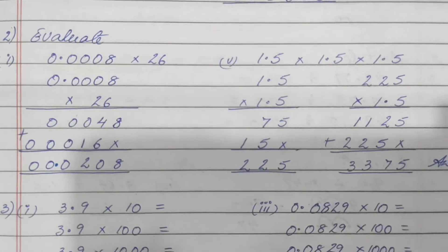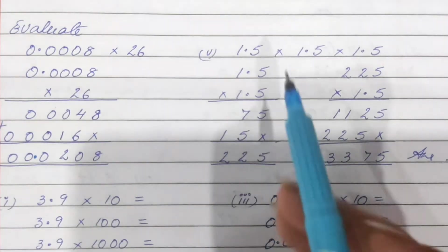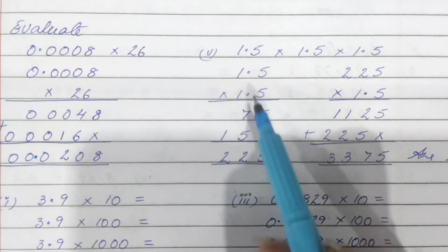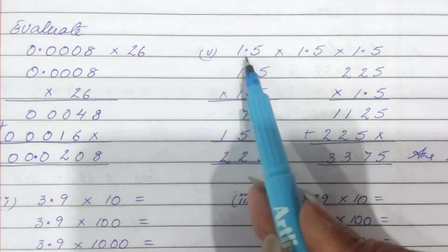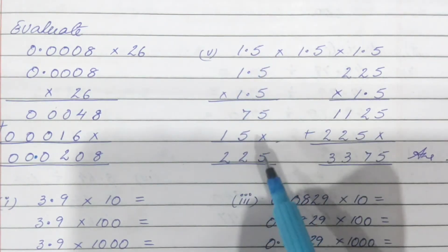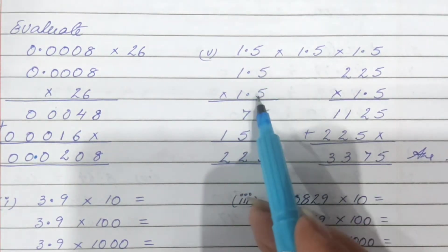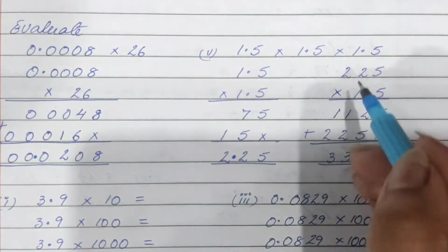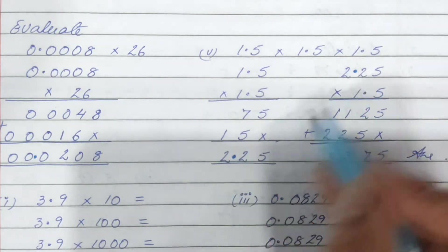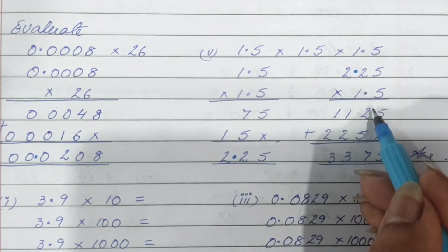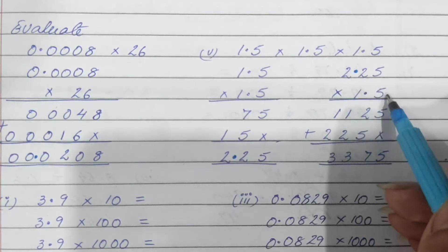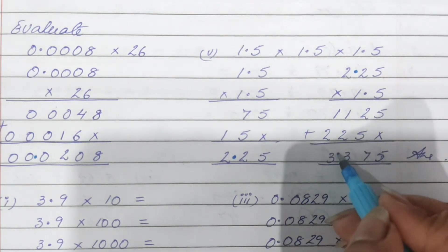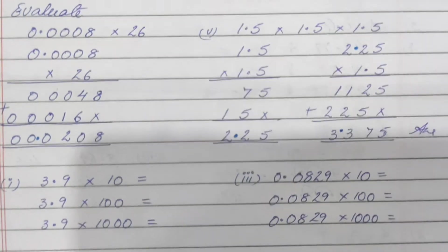Similar to it, we have the fifth sub-part where three decimal numbers are being multiplied. Multiply the first and second number first and put the decimal — one place here and one place here makes two places. Count two places and put the decimal. Then with that answer, multiply the third number. Count the number of places: 1, 2, 3. In the answer count three places — 1, 2, 3 — and put the decimal.